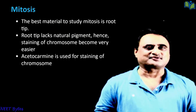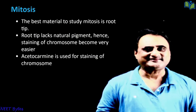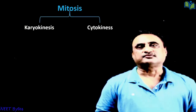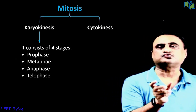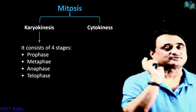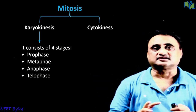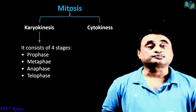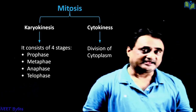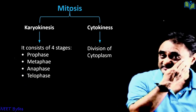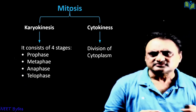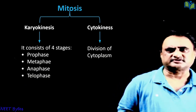Let's talk about the stages of mitosis. We divide mitosis into two parts: karyokinesis and cytokinesis. Karyokinesis is further divided into prophase, metaphase, anaphase, and telophase. As far as cytokinesis is concerned, that is the division of the cytoplasm, we will discuss it in detail later.